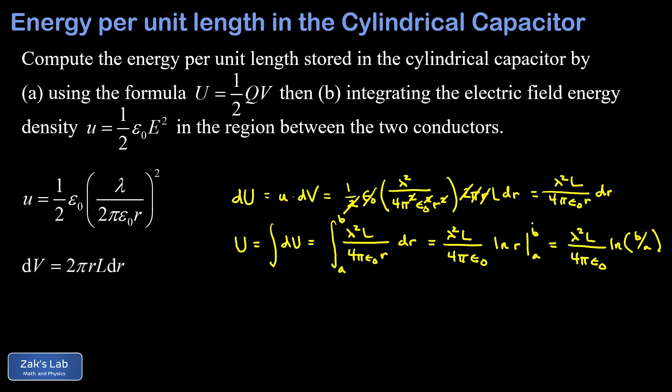The final step in our problem is to divide both sides by l. I divide an l out of the right hand side and on the left hand side it leaves me with energy per unit length. So I end up with energy per unit length stored in the cylindrical capacitor equal to lambda squared over 4 pi epsilon zero natural log of b over a, where b is the radius of the outer shell and a is the radius of the inner shell. This answer agrees with the one we got the easy way by using the energy stored in a capacitor formula.